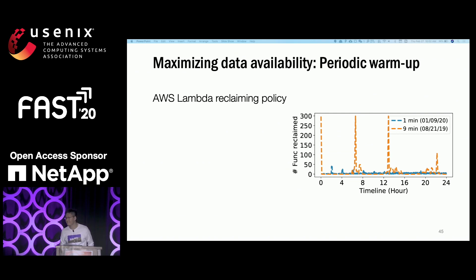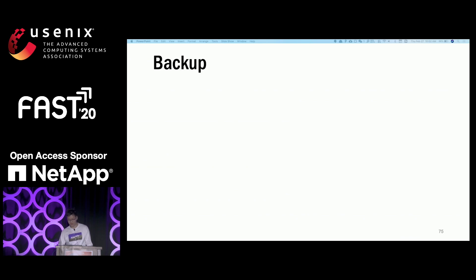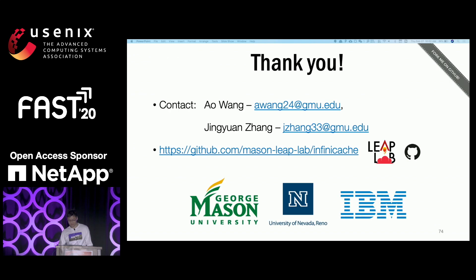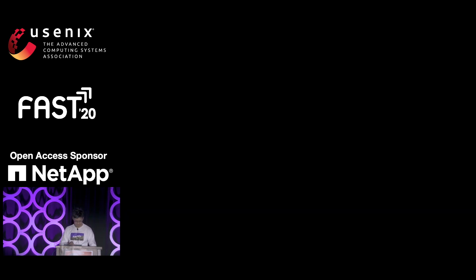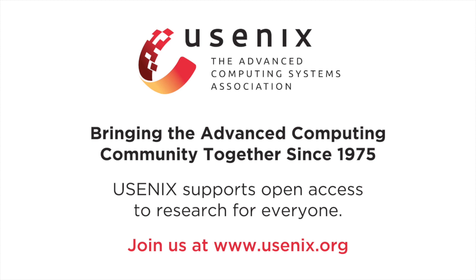Q (Vishwanath, Emory): How do you perform cache invalidations? A: Our cache is a read-only, read-through cache. If you want to do write invalidation, we insert a new version to the backup storage and repopulate the object to the cache.